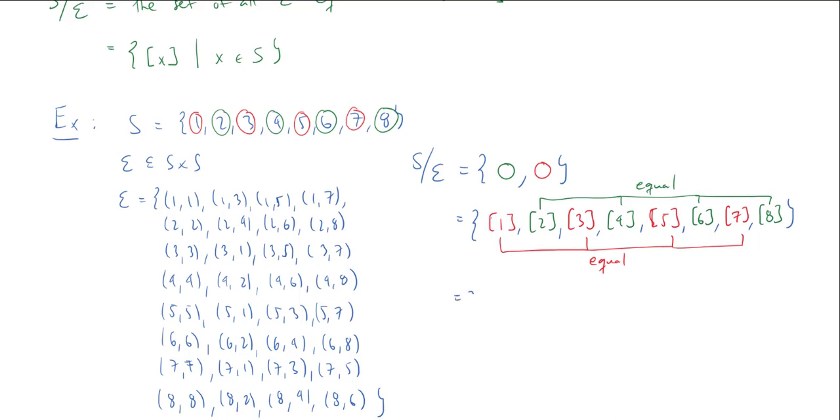So in fact, I could just write this as the class of, say, one and the class of, say, two. And that would give me everything. So if you like, one comma two is a set of representatives for this quotient.